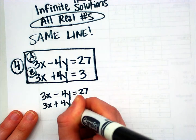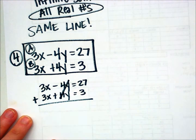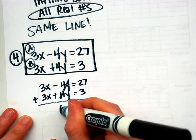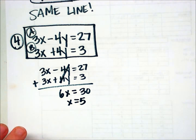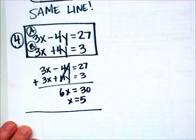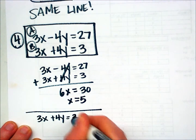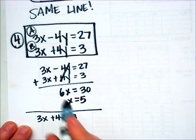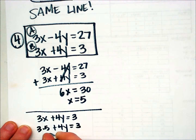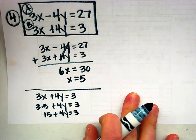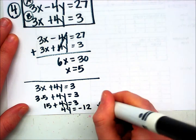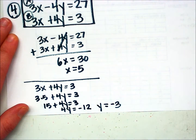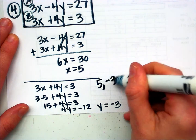I'm just going to rewrite both equations and add them. The y's cancel automatically. 3x plus 3x gives me 6x, and 27 plus 3 gives me 30, so x equals 5. Now I just need to substitute 5 in place of x in either one of the original equations — I'll use equation B. 3 times 5 plus 4y equals 3, so 15 plus 4y equals 3. Subtracting 15 from both sides: 4y equals negative 12, so y equals negative 3. The ordered pair is (5, negative 3).